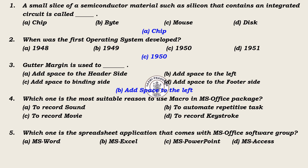4. Which one is the most suitable reason to use macro in MS Office package? A. To record sound, B. To automate repetitive task, C. To record a movie, D. To automate repetitive task. Answer: B. To automate repetitive task.